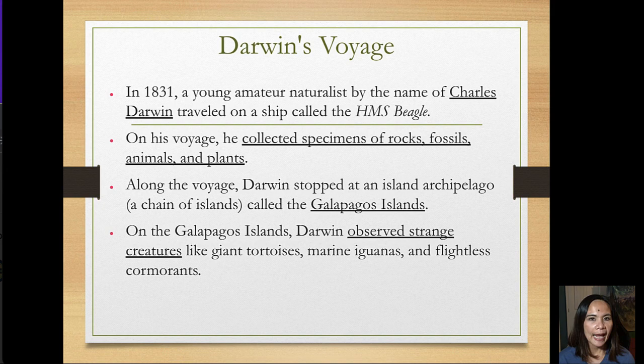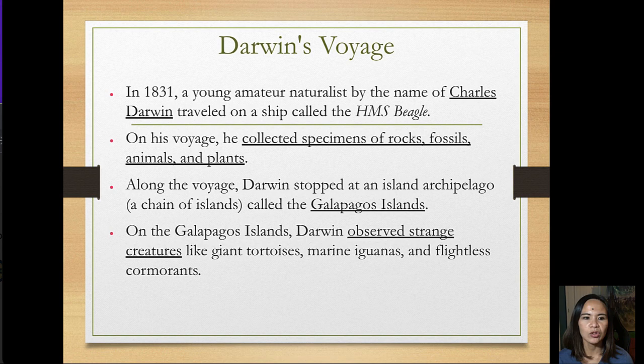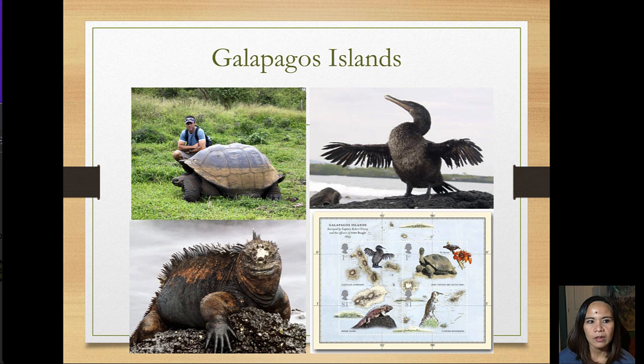In 1831, Charles Darwin traveled on a ship called the HMS Beagle. On his voyage he collected specimens of rocks, fossils, animals, and plants. Along the voyage he came across the Galapagos Islands.